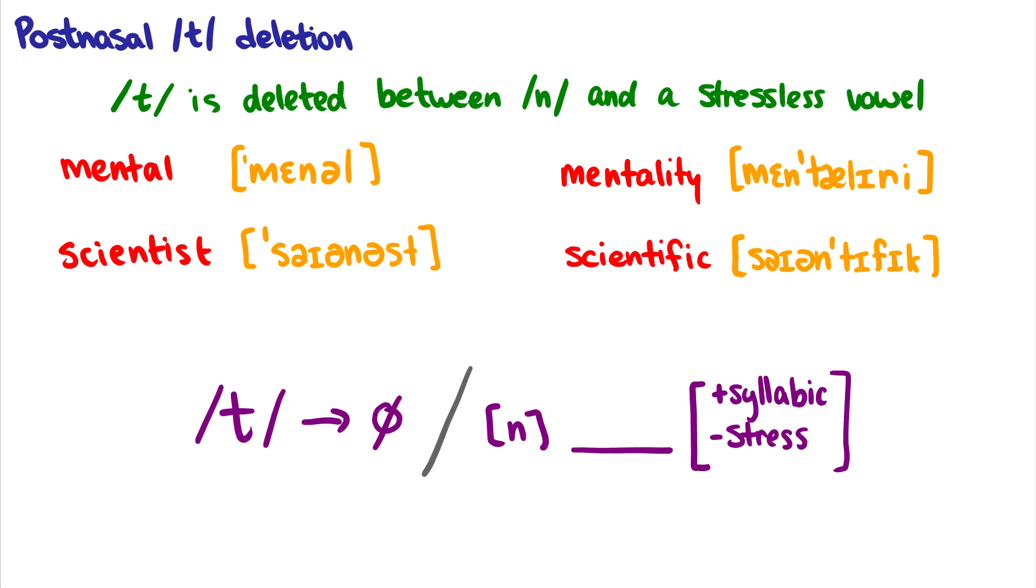Another phenomena in some dialects of English, I have it myself in some words but it's not very common. It's called post-nasal T deletion. And essentially what we say is T is deleted between N and a stressless vowel. So what is a stressless vowel? I want to compare something like the word mental with mentality. In fact these transcriptions definitely aren't the same as how I pronounce it. But two things to point out really quick.